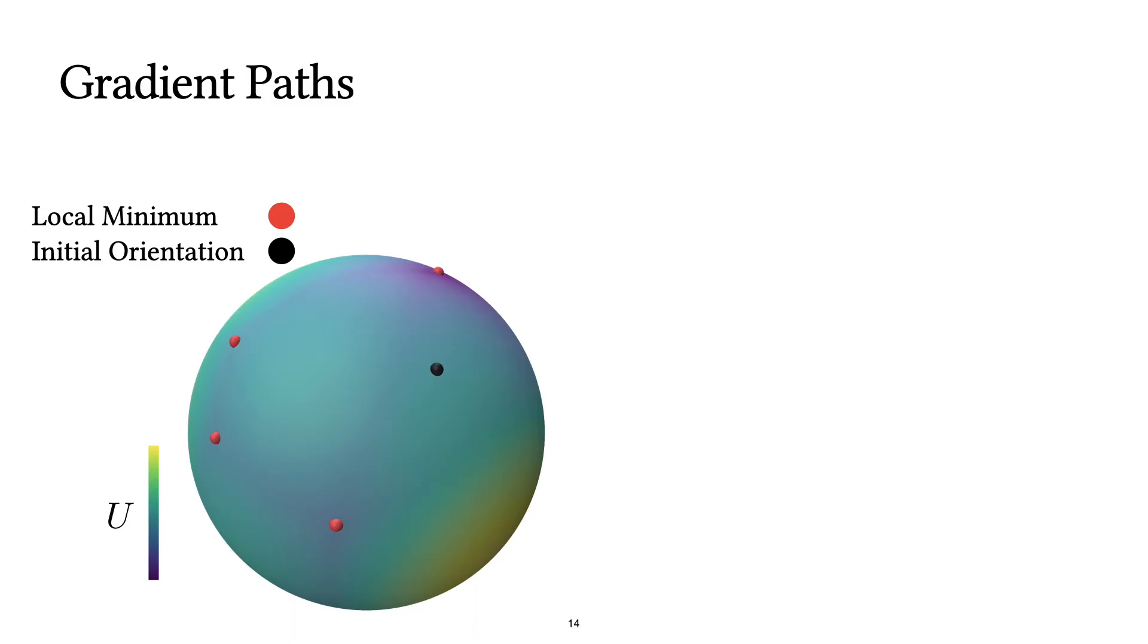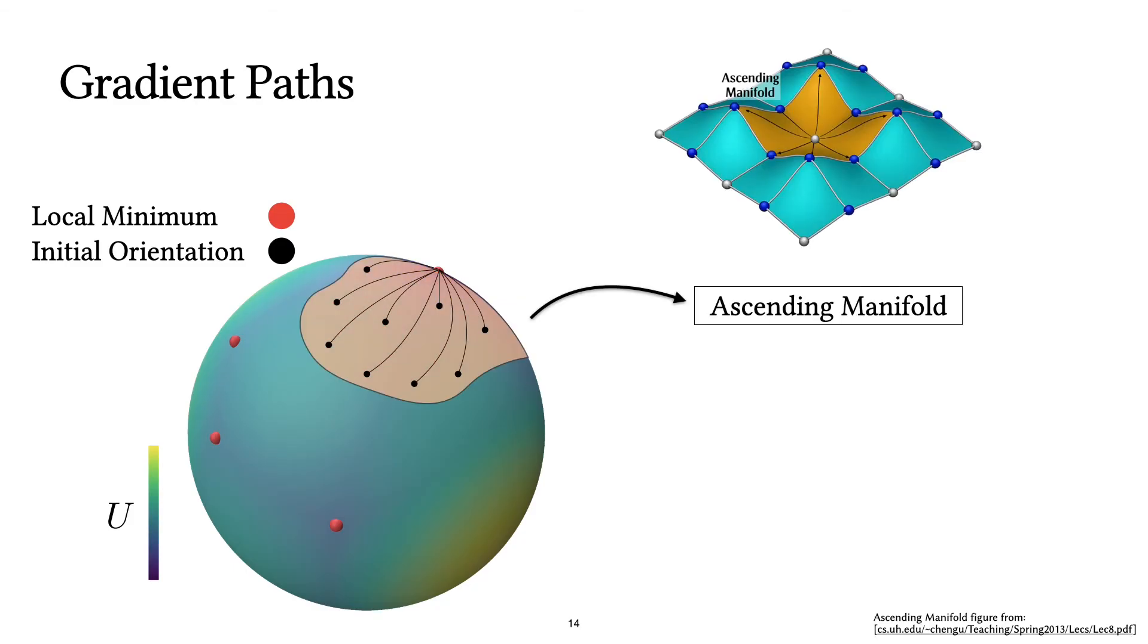This assumption not only simplifies the trajectories that we were trying to compute, but also we no longer need to sample random initial orientations. All the initial orientations that lead to the same local minimum are exactly in the ascending manifold of the local minimum. Intuitively, an ascending manifold is a bowl-shaped region around the local minimum. Once we compute these ascending manifolds, then we can compute their area and divide by the area of the whole sphere, and that gives us the probability of their corresponding local minimum.